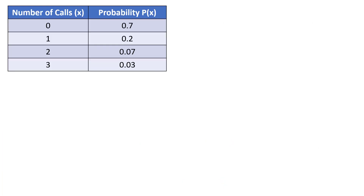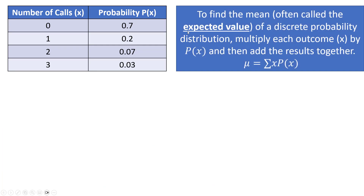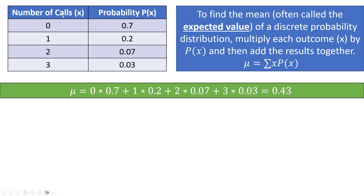Sometimes you want to find the mean of a discrete probability distribution, often called the expected value. To find the expected value μ, take each X value, multiply by its corresponding P(X), and sum all the products: μ = Σ[X · P(X)]. For the phone calls example: (0)(0.7) + (1)(0.2) + (2)(0.07) + (3)(0.03) = 0.43.